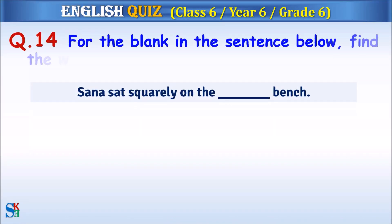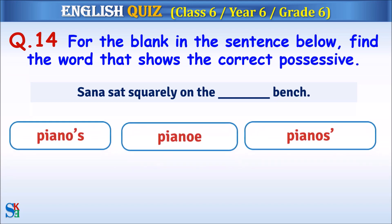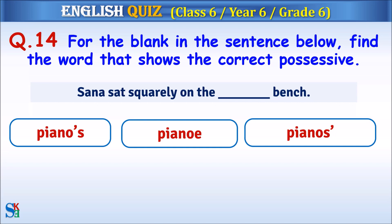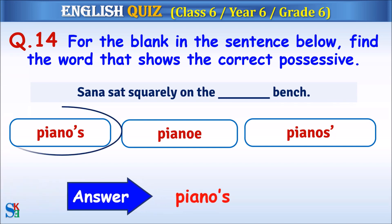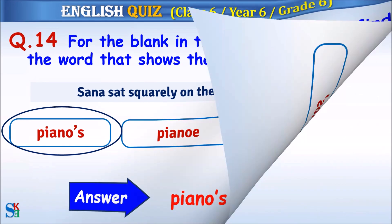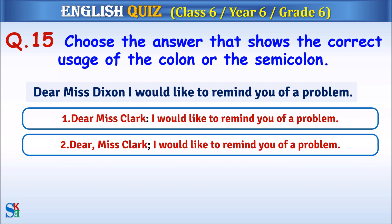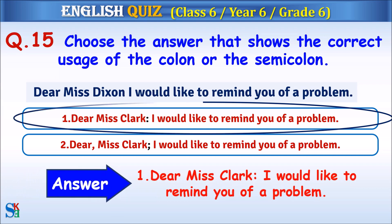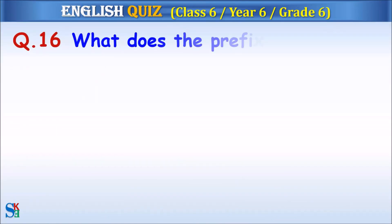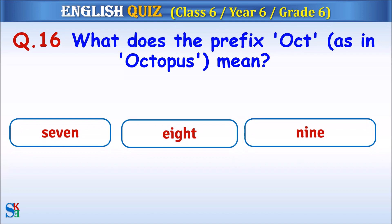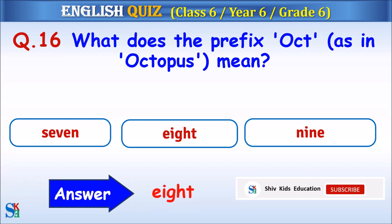Question 14: For the blank in the sentence below, find a word that shows the correct possessive. The answer is 'piano apostrophe s.' Question 15: Choose the answer that shows the correct usage of the colon or semicolon. The answer is option 1, the colon. Question 16: What does the prefix 'oct,' as in 'octopus,' mean? The answer is 'eight.'